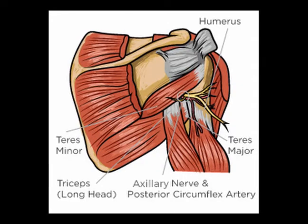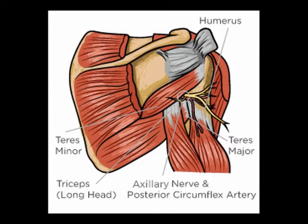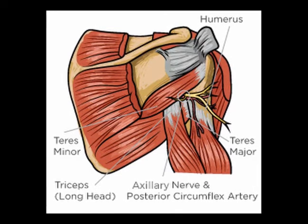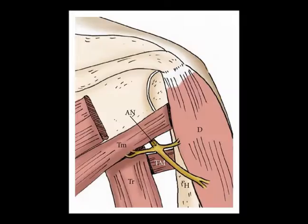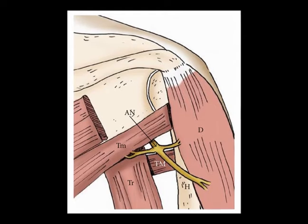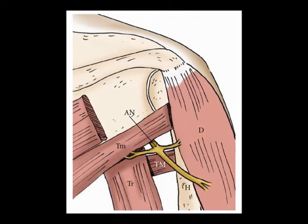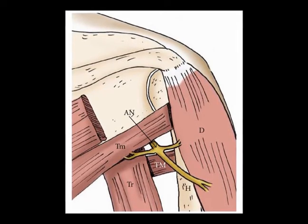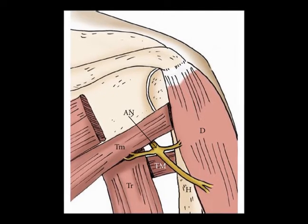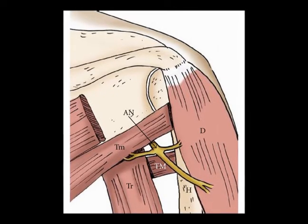It is sometimes known as the circumflex nerve. The axillary nerve enters the quadrilateral space with the circumflex humeral artery. The quadrilateral space is an anatomical area whose boundaries consist of: superiorly, the teres minor; inferiorly, the teres major muscle.